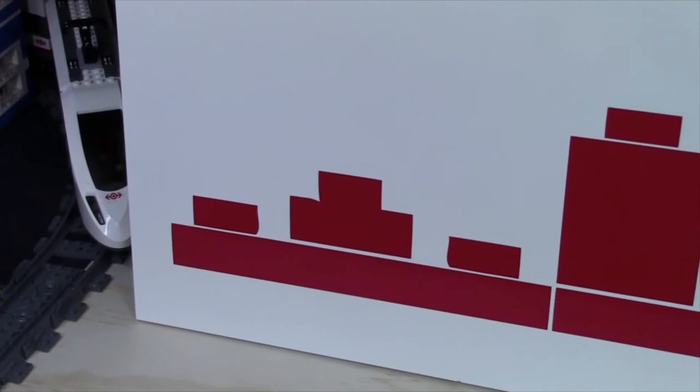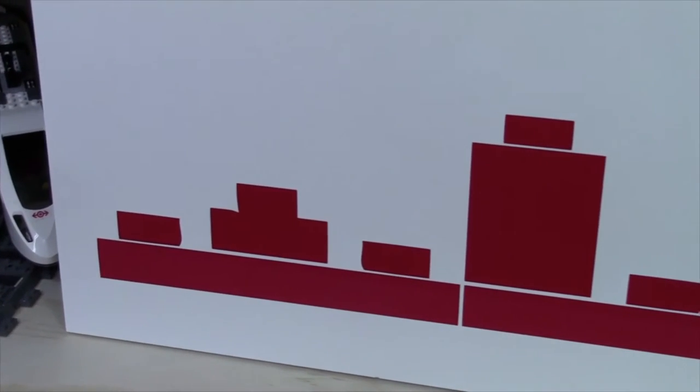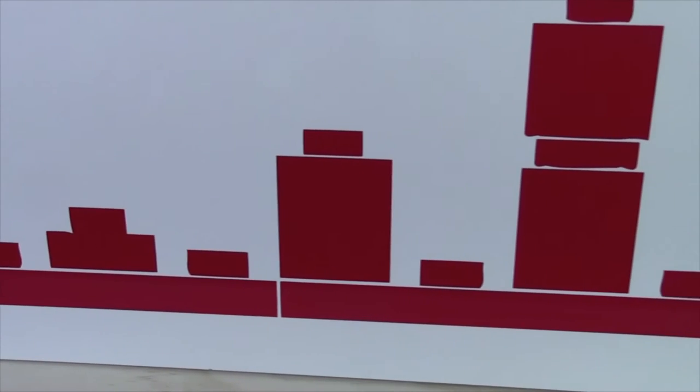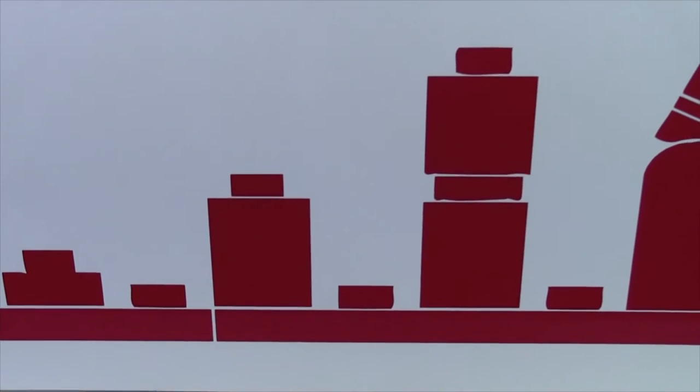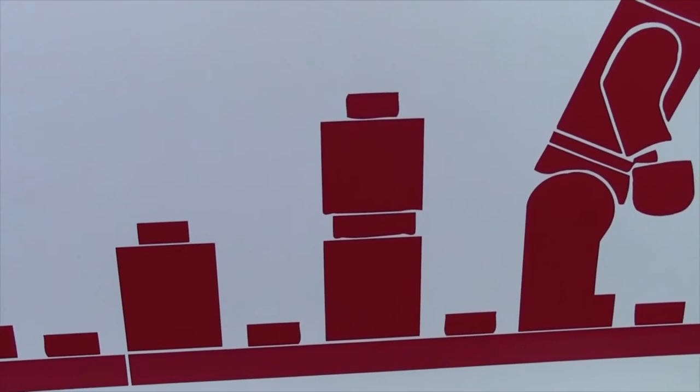So as the 1x1 plate grows older, it grows into a 1x1 brick. That 1x1 brick then grows into two 1x1 bricks and it looks like there's a little stud in the middle.